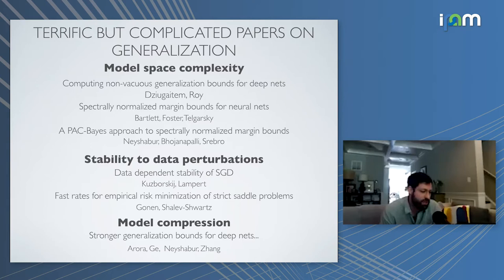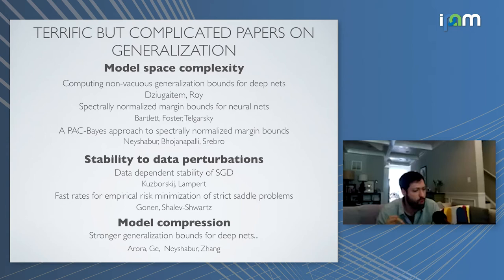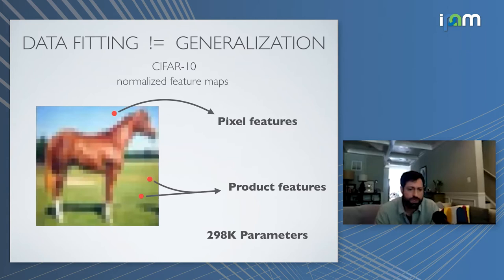There are terrific papers on generalization from a mathematical perspective, and in certain situations we can even prove generalization bounds for neural networks. However, a problematic aspect of the literature is that results often show you can prove a generalization bound for a minimum after you have it — if it has nice properties like being flat or having low-rank weight matrices. These results don't explain why we find the good minima in the first place; they just provide bounds in the event that you do find a good minimum.